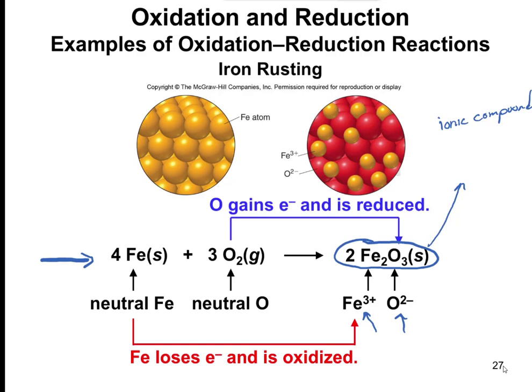So how do we know this is a redox reaction? Iron went from 0 to plus 3, so it had to lose electrons — it is oxidized, or you could say iron is the reducing agent. Oxygen went from neutral to minus 2, meaning it had to gain electrons — oxygen is reduced, or it is the oxidizing agent. Oxygen is always going to be an oxidizing agent because it causes things to be oxidized — that's part of why the whole name is what it is.